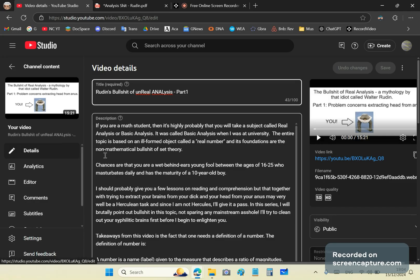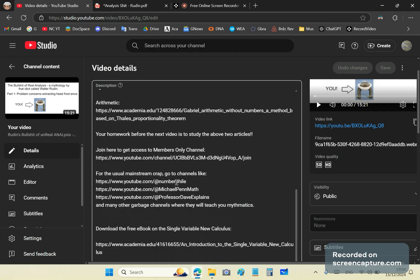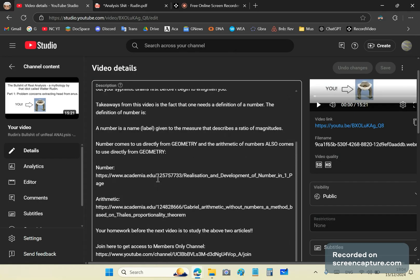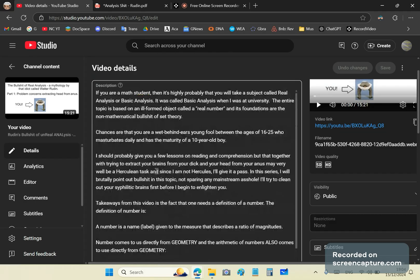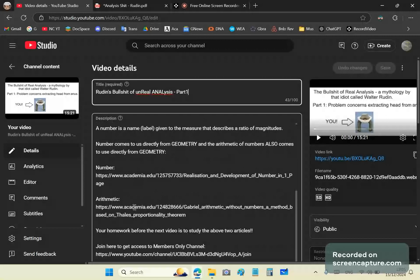So in a previous video, I started the first part of the series on Rudin's bullshit of unreal analysis. And in that section, I gave you some homework to do, setting you up to be able to question what comes next. You were supposed to study these two articles and learn where number comes from, how we realize it from nothing in a systematic and valid way.